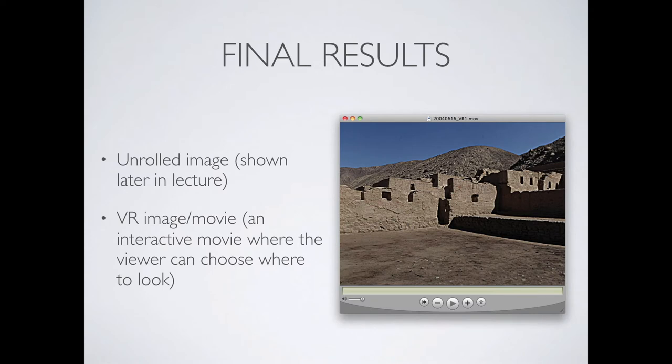The final result of this: an unrolled image distorts the image a great deal — we get bending objects, straight lines become curves. We can get that unrolled version or we can create an interactive movie, so to speak, of a static image where you can control what to look at. I'll show you an example of that a little bit later.